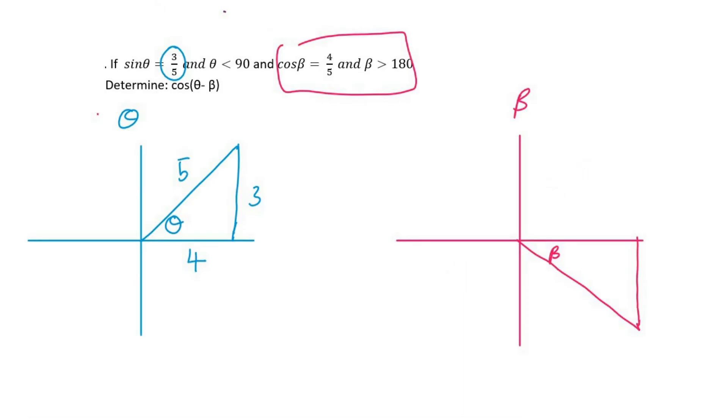So they tell us that cos is 4 over 5. Now we know that cos is adjacent over hypotenuse. So adjacent would be 4. Hypotenuse would be 5. You would do Pythagoras and find that this is 3. But remember that it's negative 3 because it's in the negative y-axis.